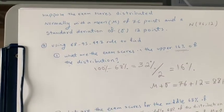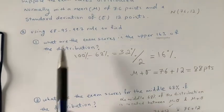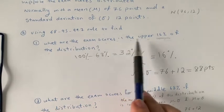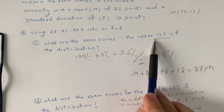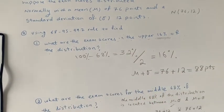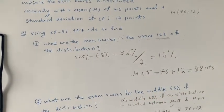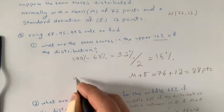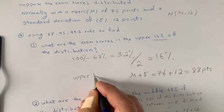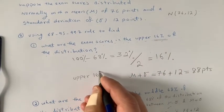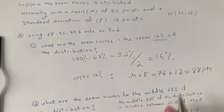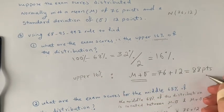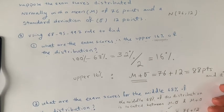On the x-axis, we have 88 points, and all observations from 88 points to the right are 16% of our observations. So 16% of exam scores are above 88 points. The upper 16% of the distribution starts from 88 points and above.